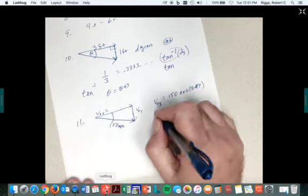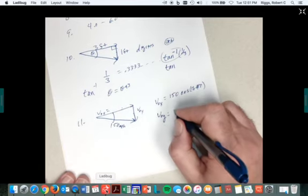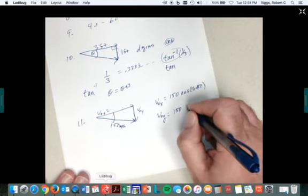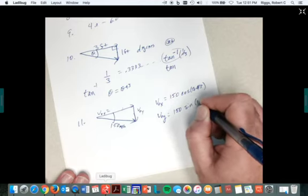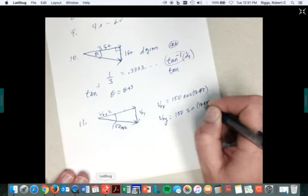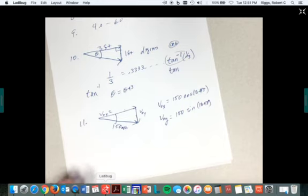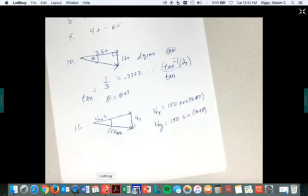And v not y, in the vertical direction, would be 150 miles per hour times the sine function of 18.43 degrees. So what your engineering friends are working on in physics class. All right, we're going to stop here. Go on. We'll finish this. I promise. Thank you.